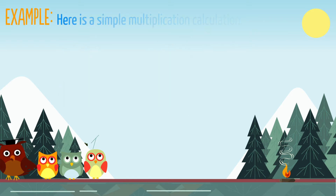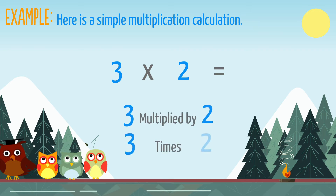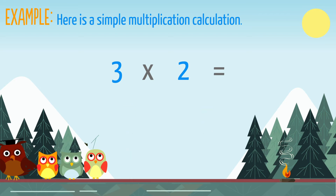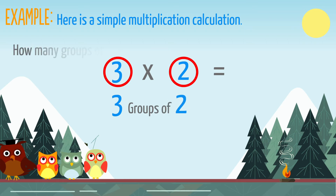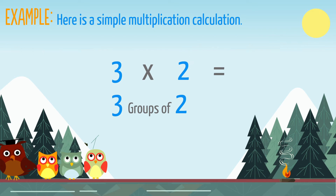Here is a simple multiplication calculation: 3 times 2 equals... We can read this as 3 multiplied by 2, or 3 times 2. But a really helpful way to read this calculation is 3 groups of 2. How many groups? 3. How many in each group? 2. So: 3 times 2, or 3 groups of 2.